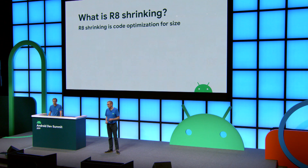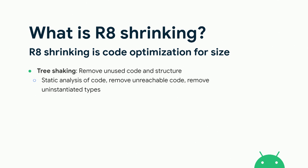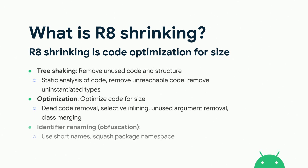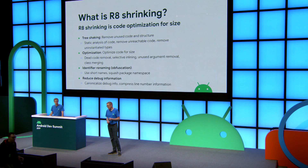So what is R8 Shrinking? In terms of R8, shrinking means optimizing code for size — reducing the amount of code in your app as much as possible. For Android, we're talking about the size of the DEX files in the app. Having a small app benefits both you and the ecosystem: it means more installs, especially in emerging markets, and more people are likely to keep your app on their phone. Overall, we have three shrinking techniques: tree shaking, which removes unused code and structure using static analysis; traditional compiler optimizations for size; and identifier renaming, also called obfuscation, which shortens names of classes, methods, and fields, and can squash the package namespace to the root. We also have ways to reduce the amount of debug information resident inside the DEX files.